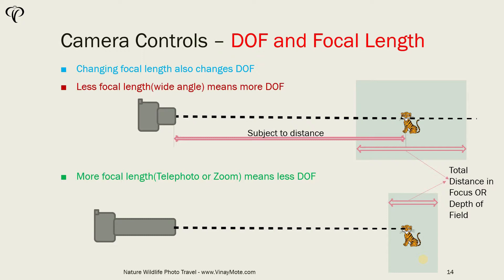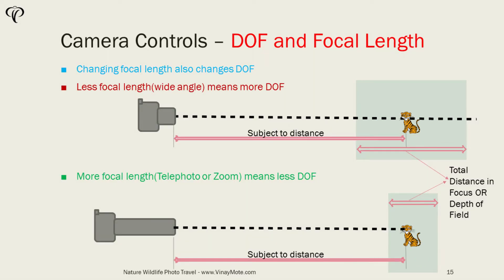This is a bit tricky because the depth of field is inversely proportional to focal length. So if you have more focal length then you've got less depth of field, and if you've got less focal length then you've got more depth of field. We are always keeping subject distance the same. So let's take an example and see how it works out.